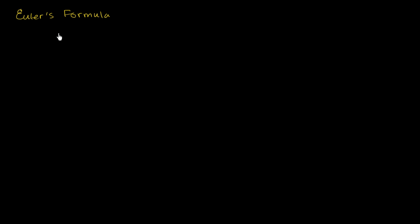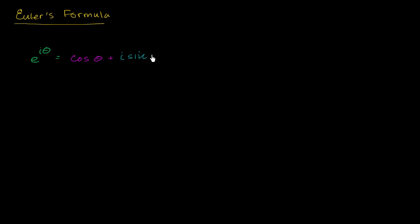In the calculus playlist, we came up with a rationale for Euler's formula. Just as a reminder, Euler's formula is that e to the i theta — and just the formula by itself is pretty amazing — but it becomes especially amazing when you substitute pi or tau for theta. Euler's formula tells us that e to the i theta is equal to cosine of theta plus i sine of theta.